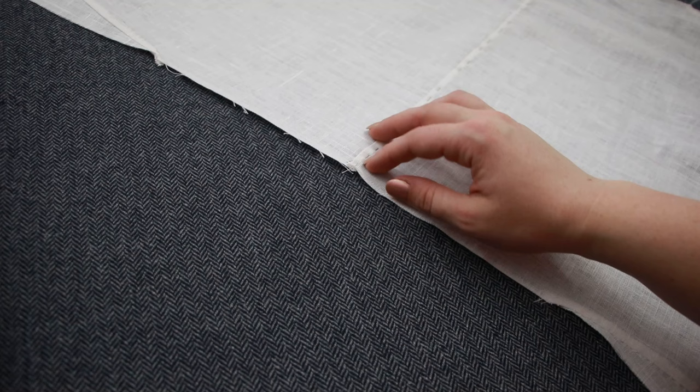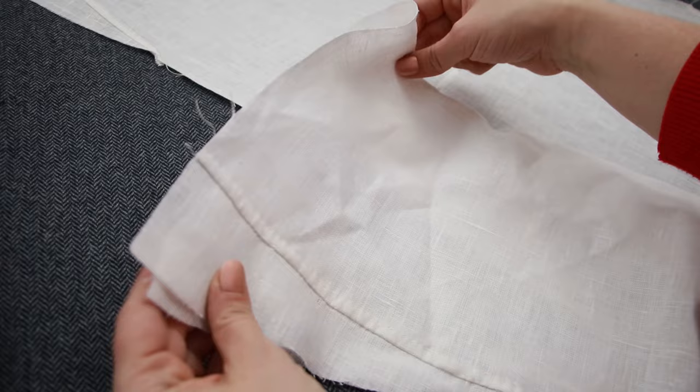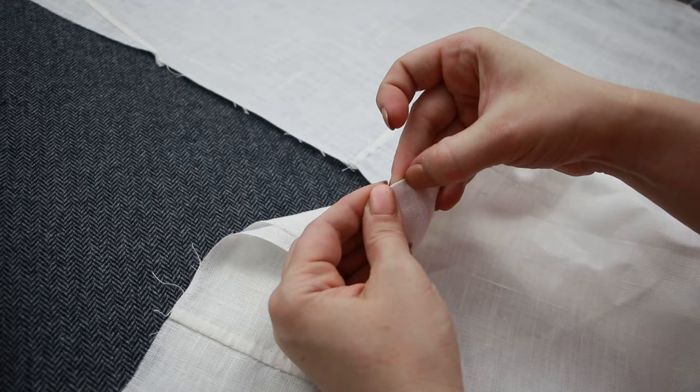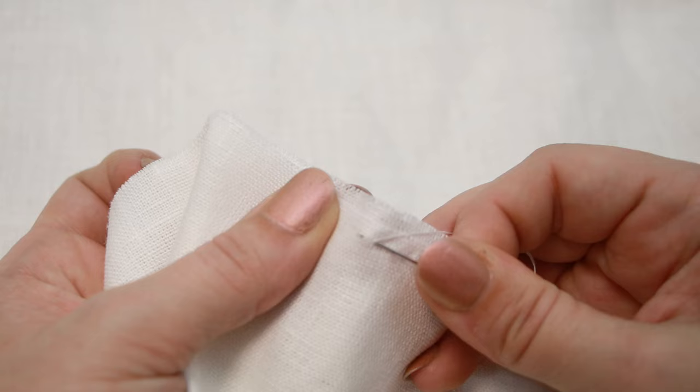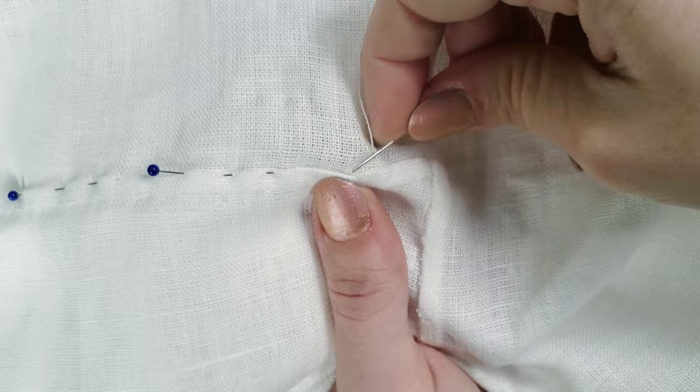Now that the shoulder seam is all finished up, my body piece is now one long piece and I can start attaching the sleeves. To do that, I'm folding the sleeves in half, creasing the center point, and then matching the center point with that new shoulder seam. I'm going to sew that the same way with a running backstitch initially, and then felling the seam allowance down.